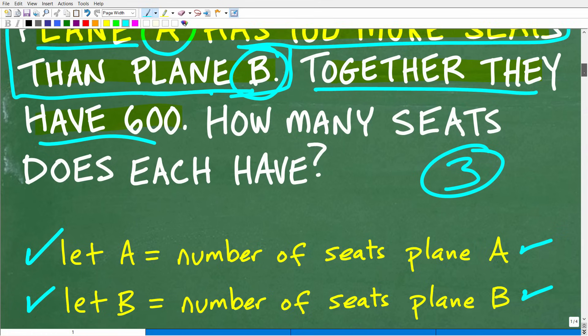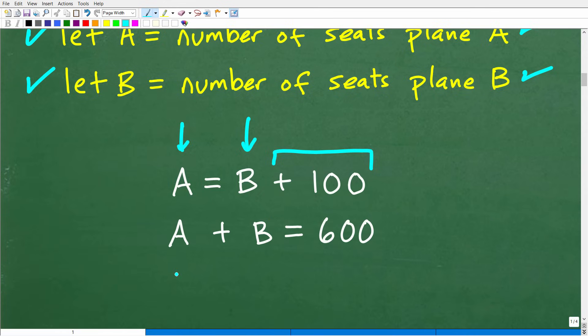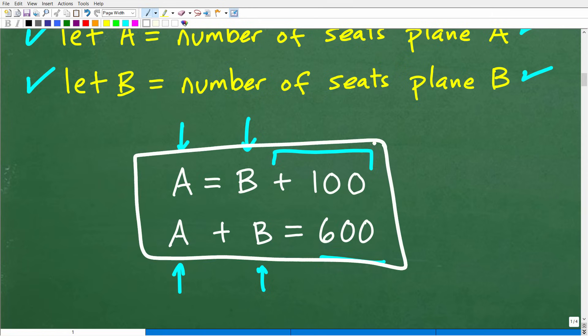And then the second part is very easy, together they have 600 seats. So together, whatever amount of seats plane A has, if we add that to the total amount of seats in plane B together, they have 600 seats. So right now we have what we call a system of equations. And specifically, this is called a system of linear equations. This is stuff that you learn like in algebra one, first year algebra.